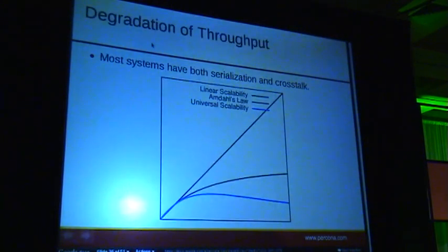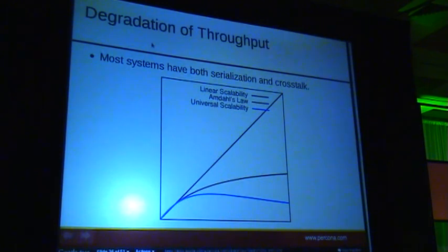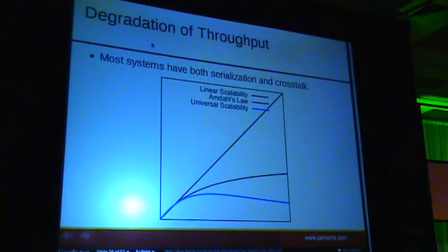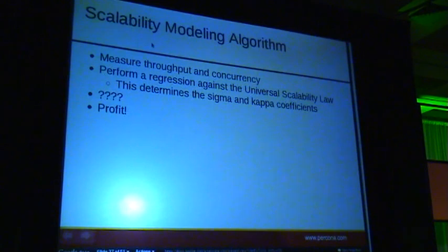So linear scalability is that diagonal line. Amdahl's Law is the red line that eventually approaches an asymptote — the asymptote is the reciprocal of the serial portion. So if the serial portion of the workload is 10%, then the asymptote Amdahl's Law approaches is going to be 10. And the Universal Scalability Law does what real systems do: it peaks and then drops off, and we start to get less throughput as we increase the work or the demands on the system. The USL models how we know real systems tend to behave in real life — this is the basis for forecasting and modeling how a system can scale over time.